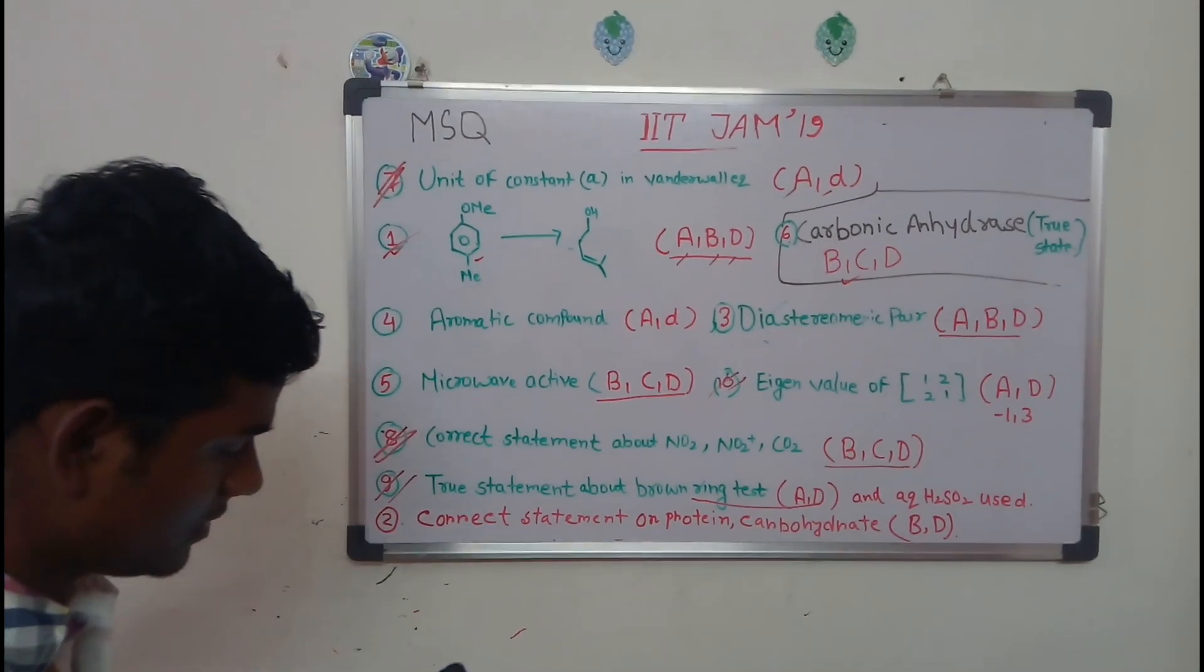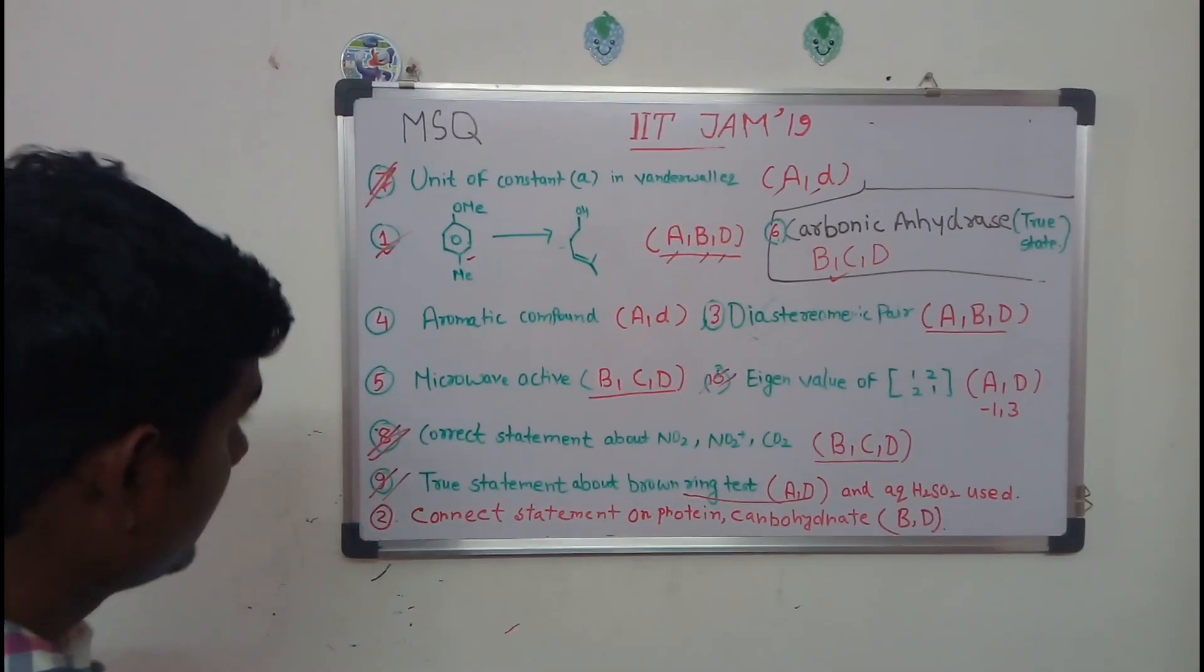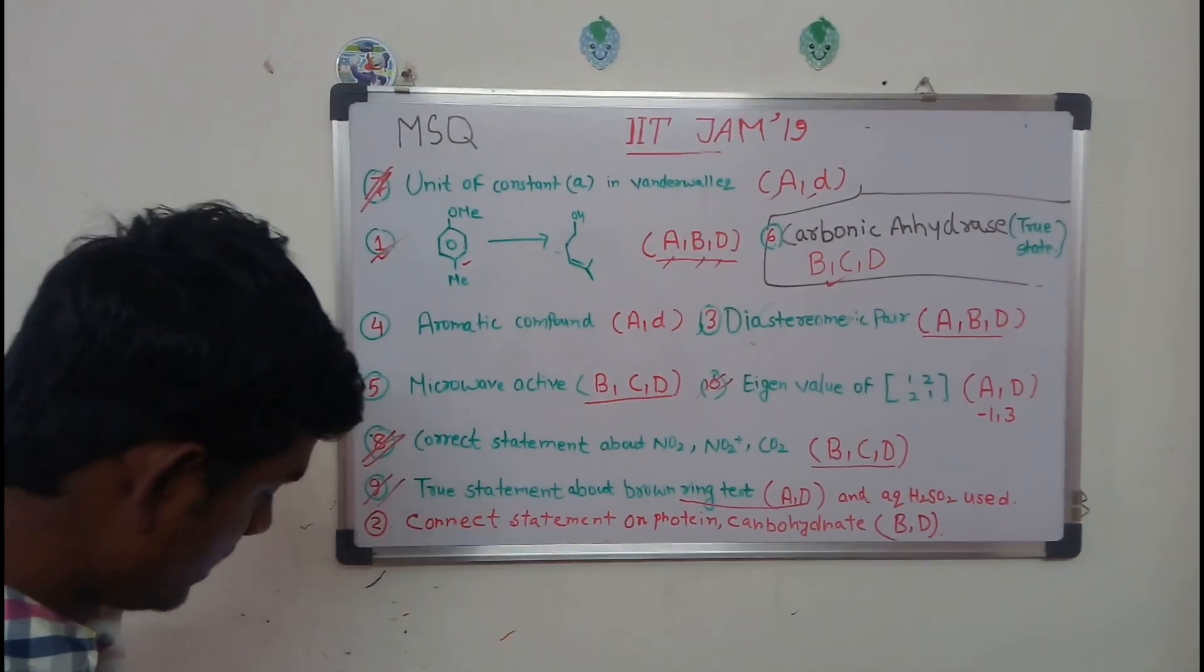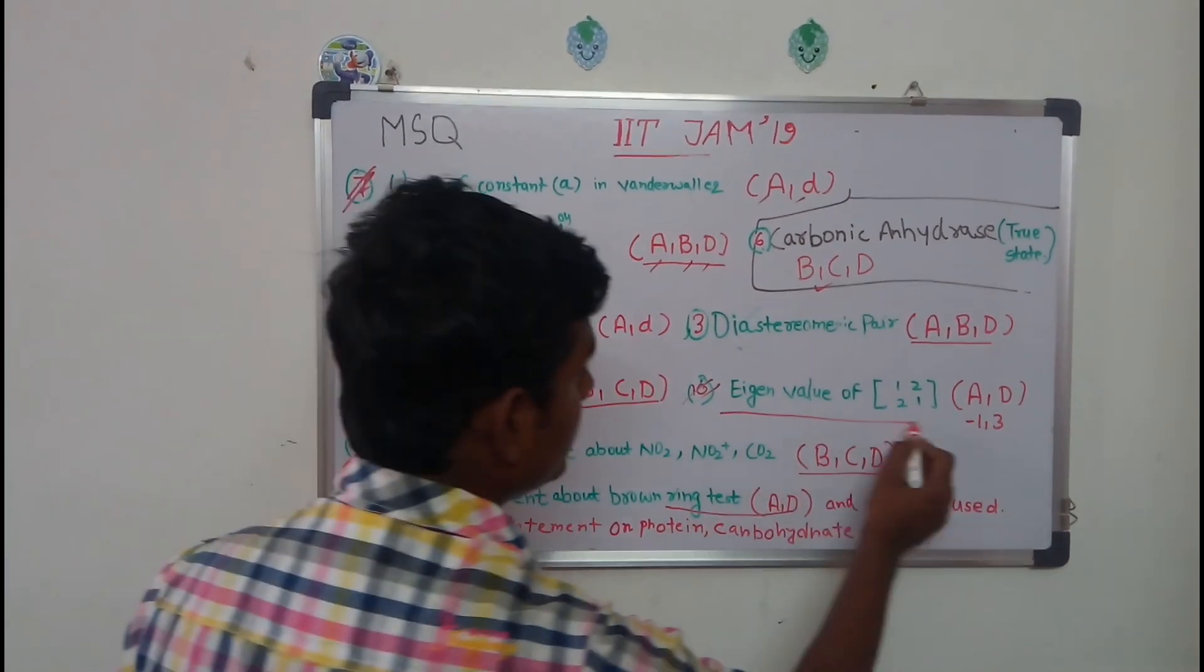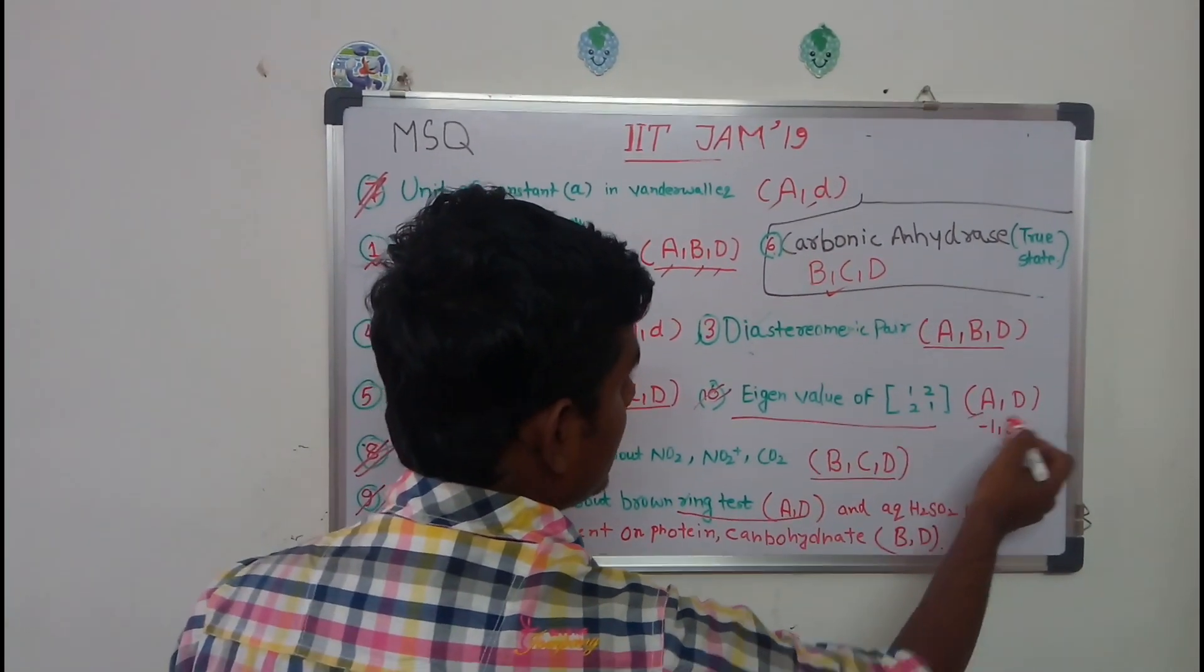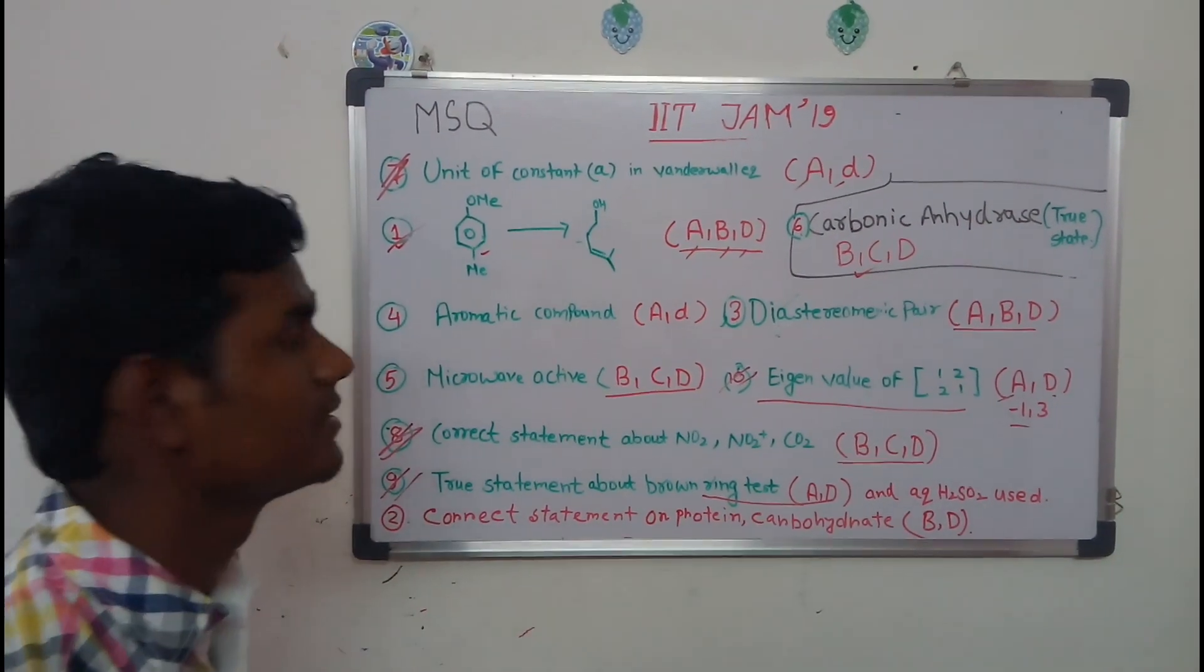Then let's take the other question - the eigenvalue. It's given here, so its answer is A and D. It will be minus one and three. Thank you for being with us.